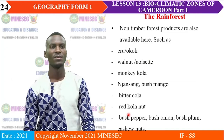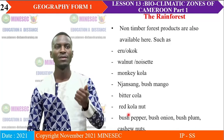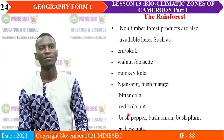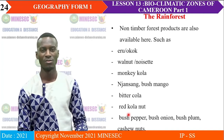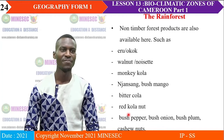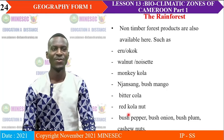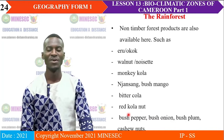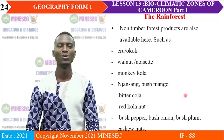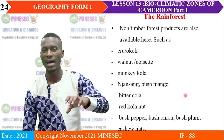Still in the rainforest, apart from animals and timber, we equally have non-timber forest products available there. For example, we have the okok leaf used to make food, the walnut (noisette in French), the monkey cola, the djansang, the bush mango (obonor), the bitter cola, the red cola nut, the bush pepper, the bush onion, the bush plum, and the cashew nut. Those are the things we can equally find in the forest.